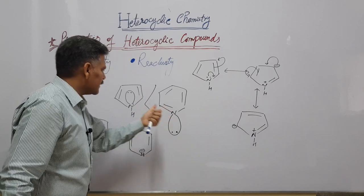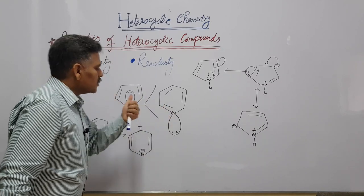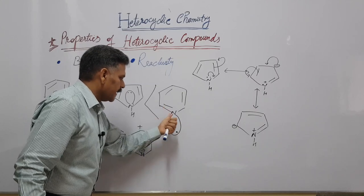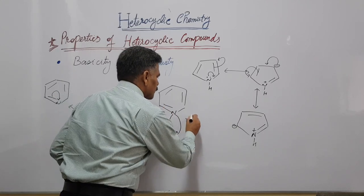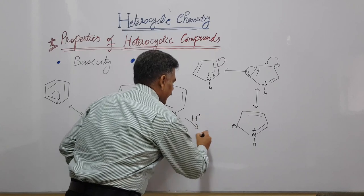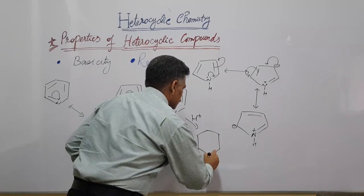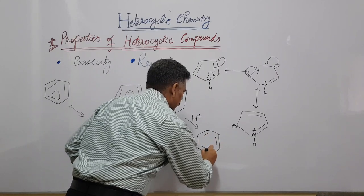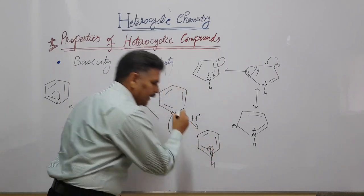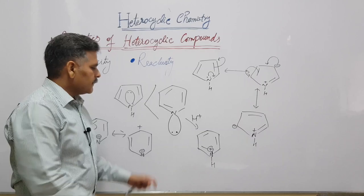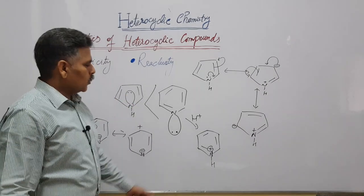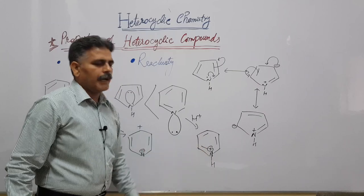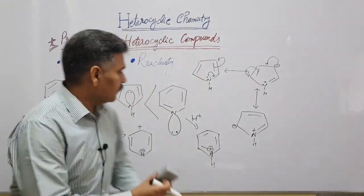As a result, pyrrole is less basic as compared to pyridine, and pyridine is more basic as compared to pyrrole. This is because of the perpendicular orientation of the lone pair of nitrogen in pyridine, which can be donated to acids. The pyridinium ion is still aromatic in nature and is stable because of delocalization of pi electrons.